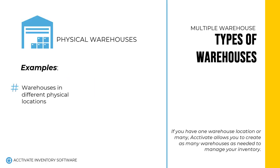To start off, let's talk about physical warehouses. When you have multiple physical places that inventory is stored, such as a New York and a California warehouse, you may have more than one physical warehouse in the system. Other examples could be when you have a salesperson with inventory in their vehicle or at their home that they take to client sites — you'll want to be able to track exactly how much inventory they have at all times.